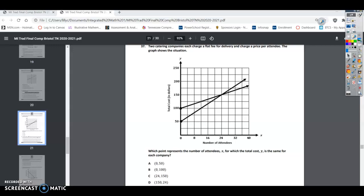Math 1, final benchmark number 37. Two catering companies each charge a flat fee for delivery and charge a price per attendee. The graph shows the situation.